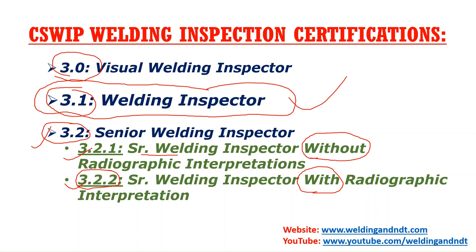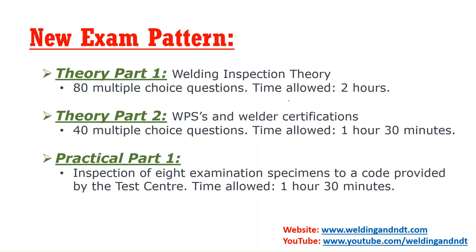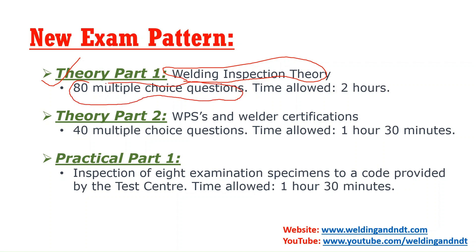CSWIP has updated their exam pattern for the 3.1 welding inspector exam, and this update is effective from June 2024. The new exam pattern contains three papers. Theory Part 1 covers welding inspection theory and contains 80 multiple choice objective type questions, with a time allotment of two hours.